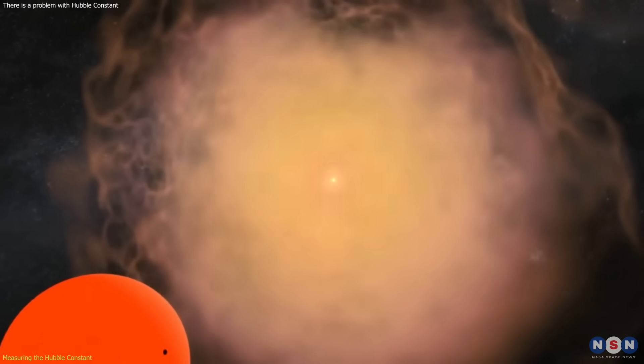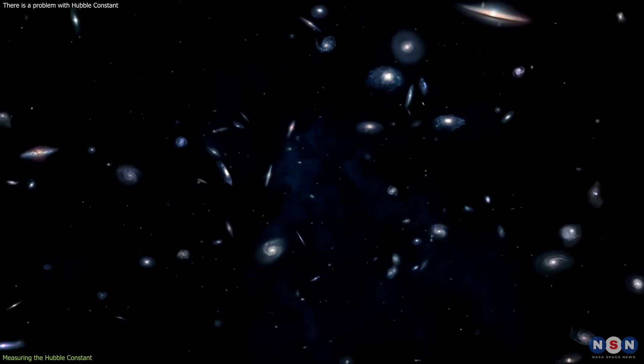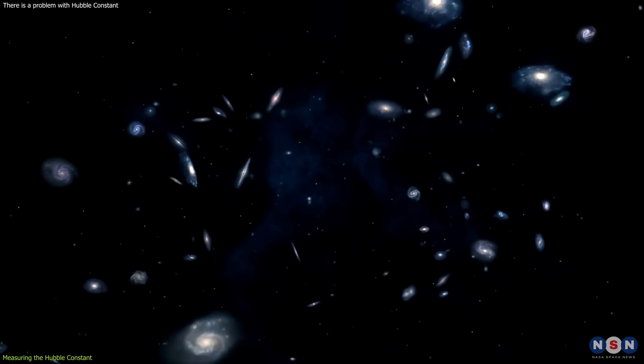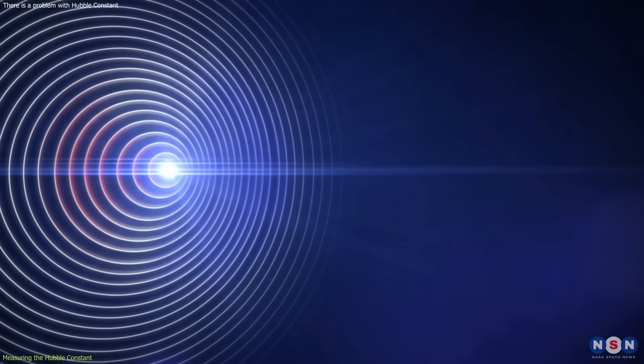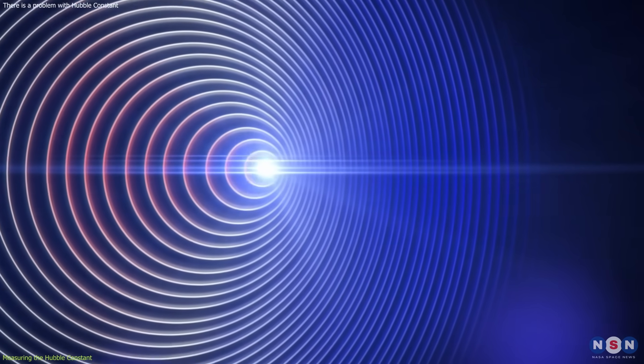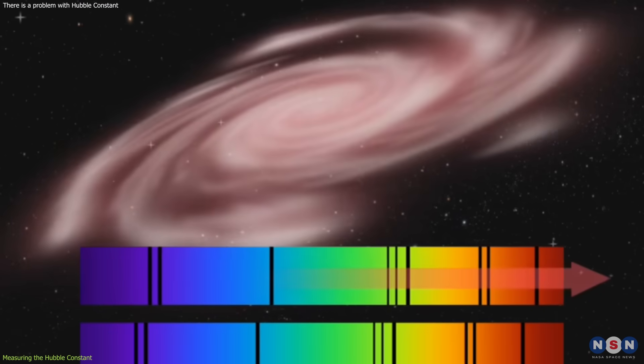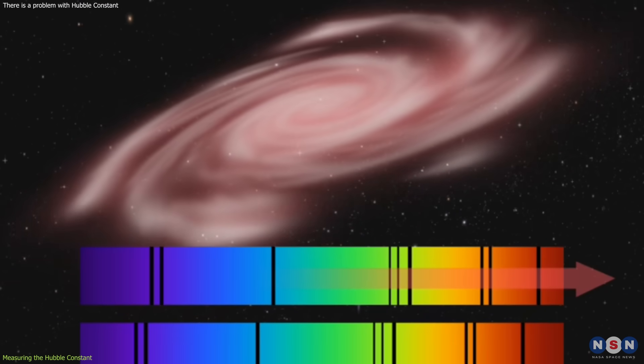The second step is to use these distances to measure the velocities of galaxies by using the Doppler effect, which is the change in the wavelength of light due to the motion of the source. The faster the galaxy is moving away from us, the more its light is shifted to the red end of the spectrum.